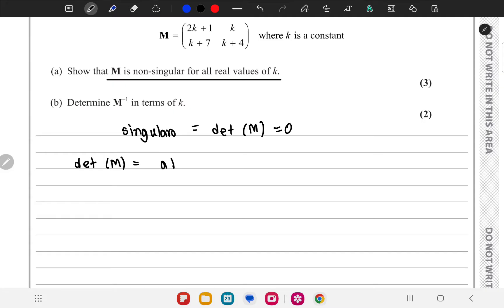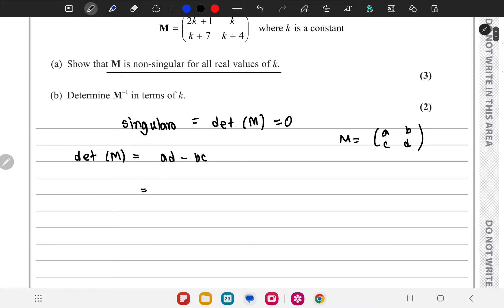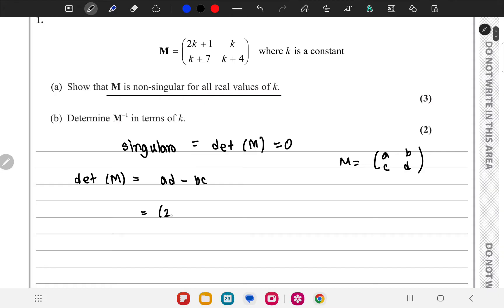So determinant is AD minus BC for a matrix like this. So for this case we will get 2K plus 1 times K plus 4 minus B is K. This is K plus 7.